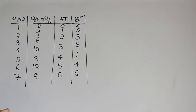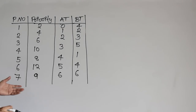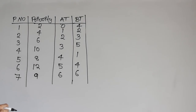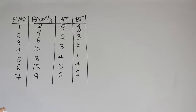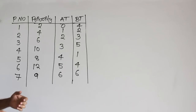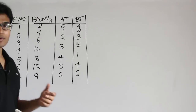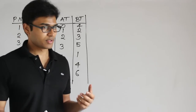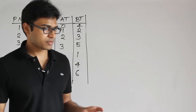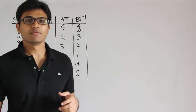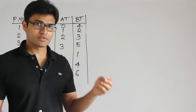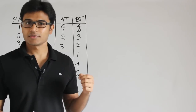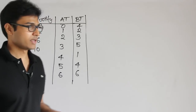Now let's look at the preemptive version of this priority-based algorithm. Preemptive version means we are going to stop a process as and when a new process with higher priority is available — that is called preemption. Non-preemptive means once we have chosen a process with some priority, we are going to finish it off.